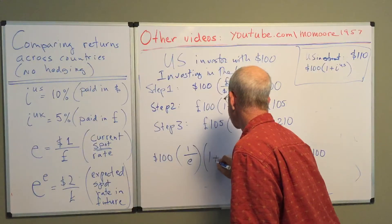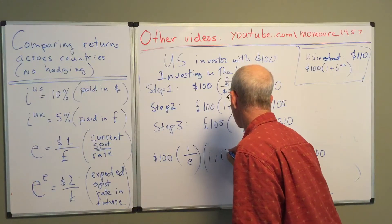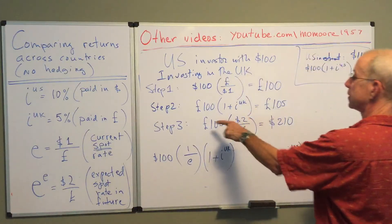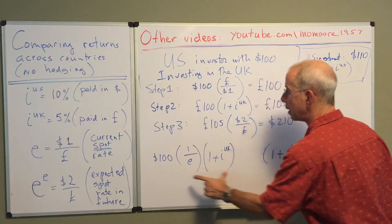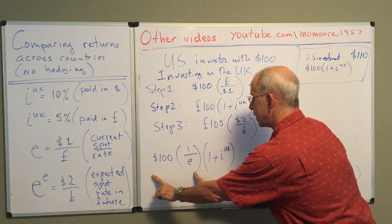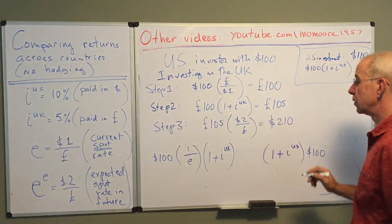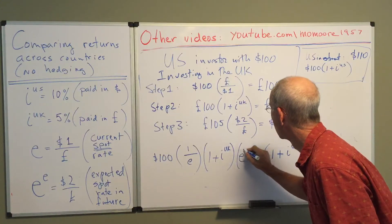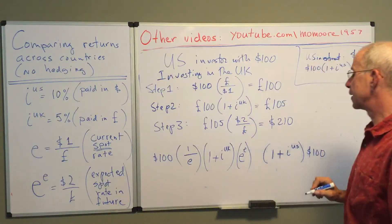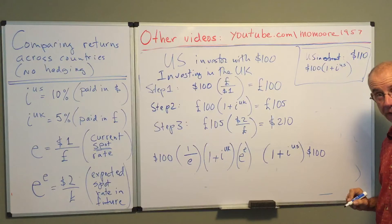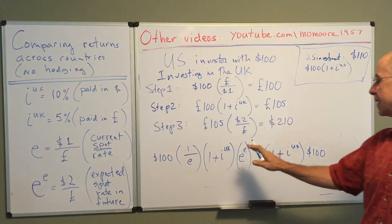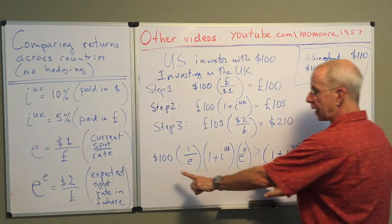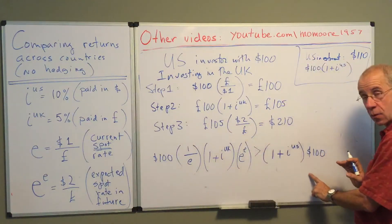We then use the UK interest rate. So this is the second step. This is step one. You take the result of this, multiply it times that to get step two. And then we look at the expected exchange rate. In this case, we had that the left-hand side was greater than the right-hand side.